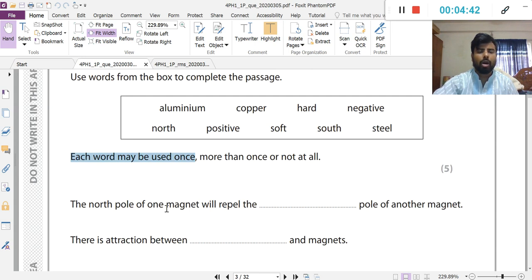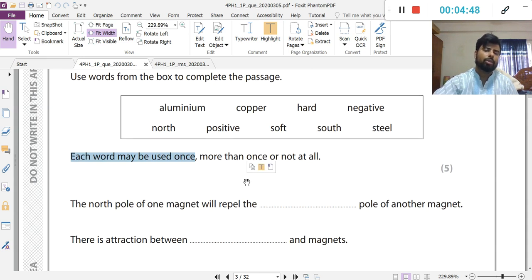The north pole of one magnet will repel the dash pole of another magnet. So, you know the like poles repel each other. There is a property of magnet: like poles repel each other and unlike poles attract each other. Here the word is repel. So remember the north pole. Here answer will be north.